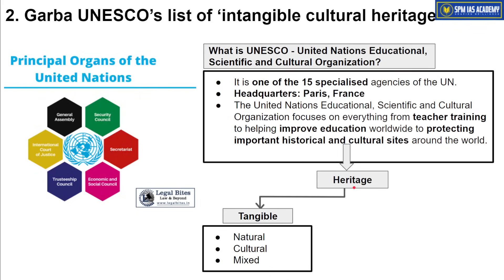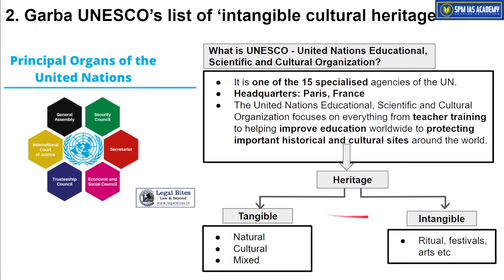Heritages can be divided into two parts: tangible heritages, which we can touch and feel, and intangible heritages, which we can only experience and perform. Tangible heritages include natural heritages like Kaziranga National Park, and cultural heritages like the Red Fort and Taj Mahal, and mixed heritages with features of both. Intangible heritages include performing arts, rituals, and similar practices.